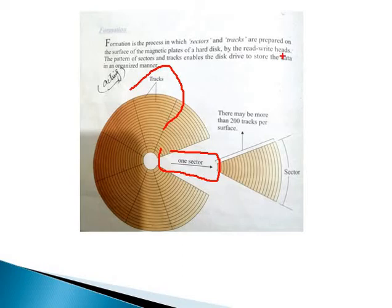The pattern of sectors and tracks enables the disk drive to store the data in an organized way. Now look at this - there are maybe more than 200 tracks per surface.